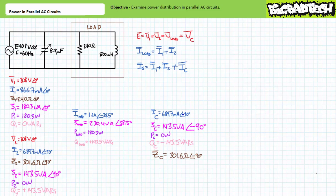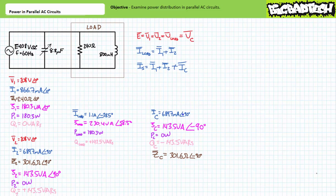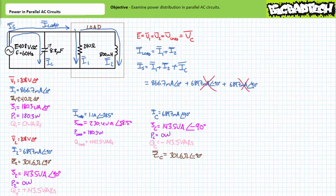Let's now inspect how this power factor corrected parallel circuit operates. Including the power factor correcting capacitor does not in any way affect the performance of the fixed load. However, the source sees another path for current — a path that is essentially the mirror image of the inductive portion of the fixed load. As Kirchhoff's current law demonstrates, source current is the sum of the current through the power factor correcting capacitor plus current through the load. Substituting in our given values, the equal and opposite currents cancel each other out, and source current drops to 866.7 milliamperes at an angle of zero degrees — equal only to that drawn by the resistive portion of the fixed load.